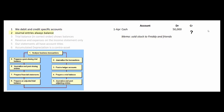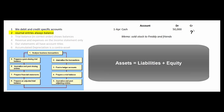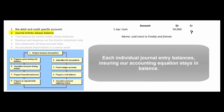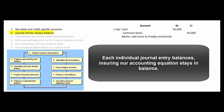Journal entries always balance. If we have $50,000 worth of debits, we have to have $50,000 worth of credits. That's how our accounting equation stays in balance. Remember, the accounting equation is: assets equal liabilities plus owner's equity. If each individual journal entry balances, our accounting equation and by extension our balance sheet stays balanced.